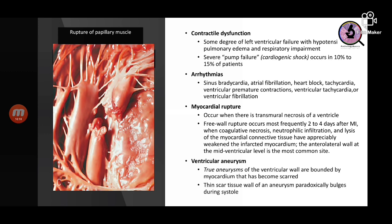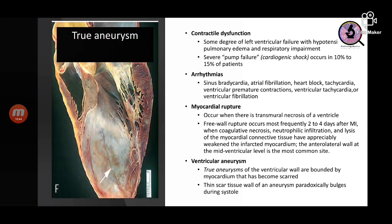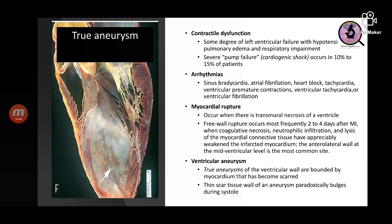There may be aneurysms, which are of two types: true and false aneurysms. True aneurysms are bounded by thinned-out myocardium — when the heart beats, that particular area paradoxically bulges during systole. False aneurysms involve a complete rupture of the myocardium where blood is contained within the cardiac cavity.